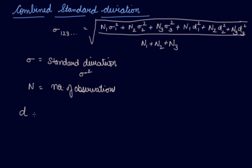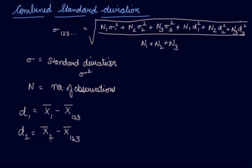Now what is d in this case? If talking about the first series, d1 is the mean of the first series minus the combined mean — it is the deviation taken from the combined mean. For 3 series, deviation d2 is the mean of series 2 minus the combined mean. D3 is the mean of series 3 minus the combined mean.